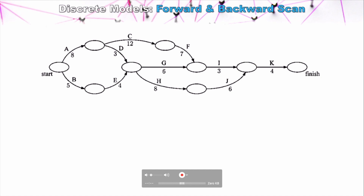Starting with the forward scan: beginning at the start node, we look at the earliest possible time we could start each task. Task A and Task B can be started at zero units of time — units may be days, weeks, or hours depending on context. As we move forward, to start Tasks C and D we need Task A to be completed. Task A takes eight units of time, so the earliest possible start time for Tasks C and D is eight units. We refer to this as the earliest start time.